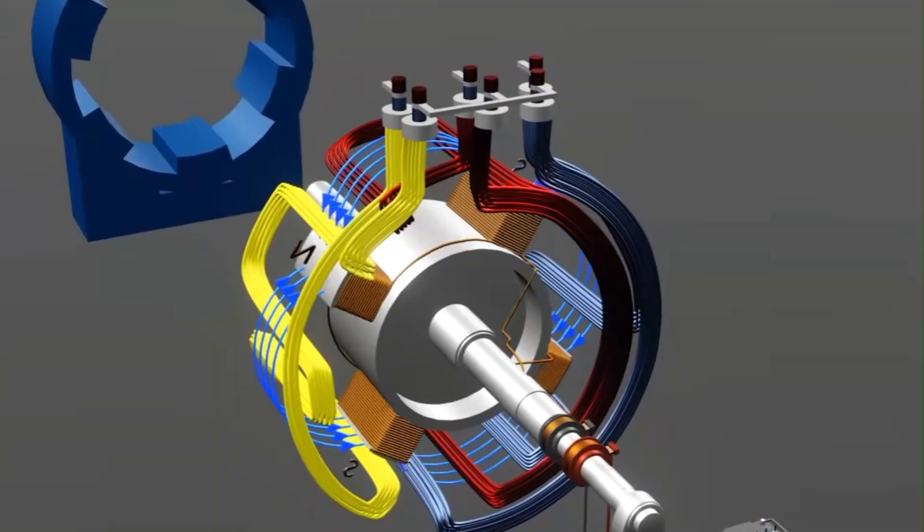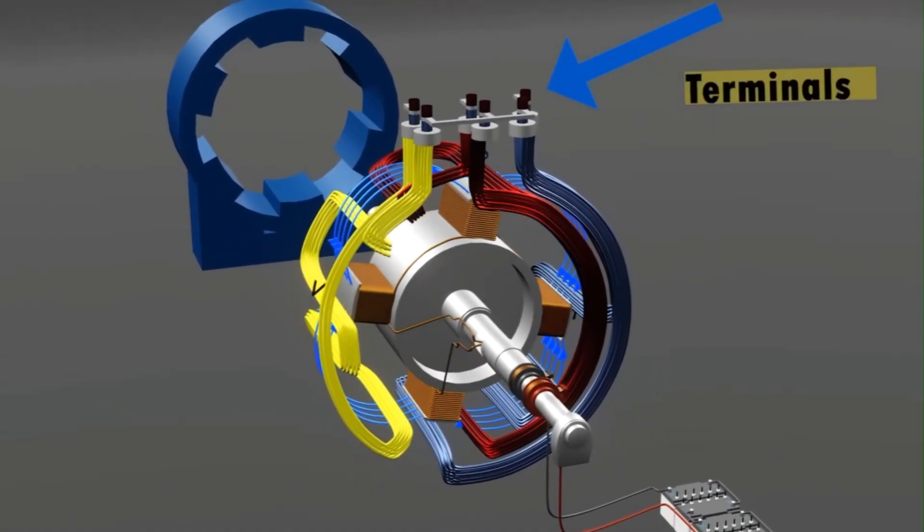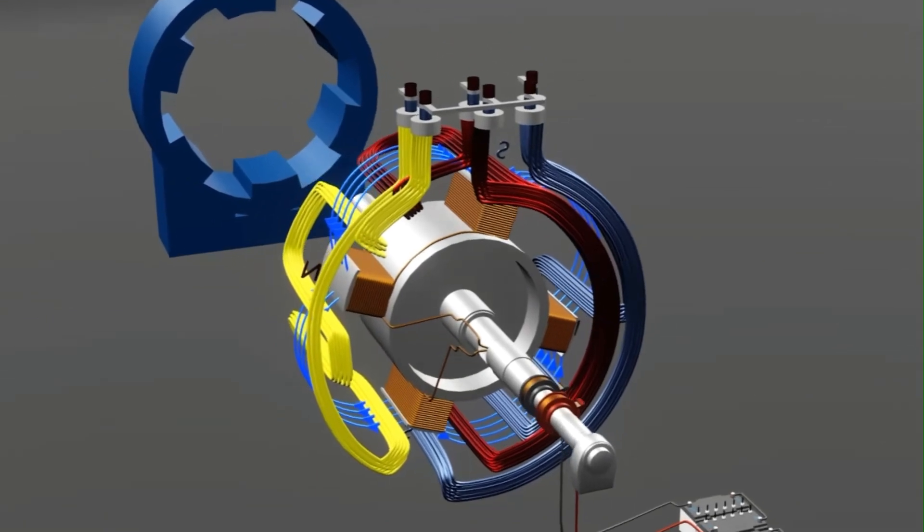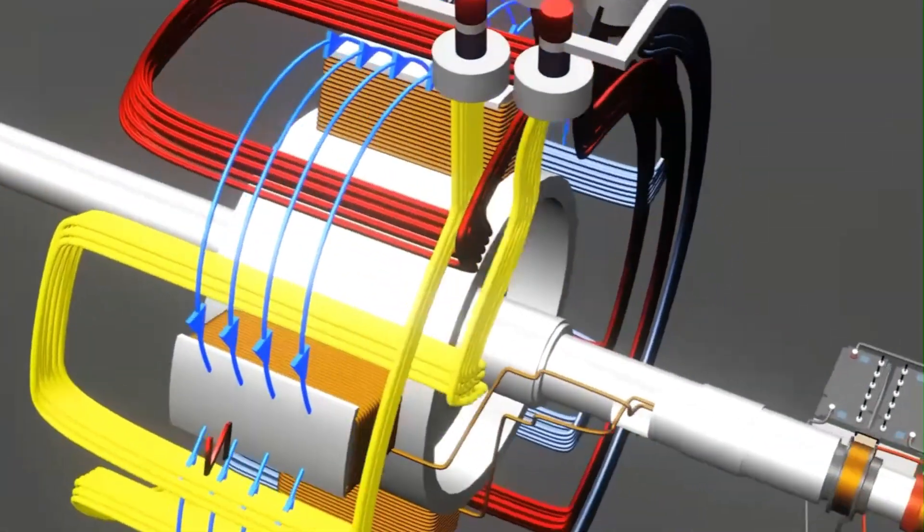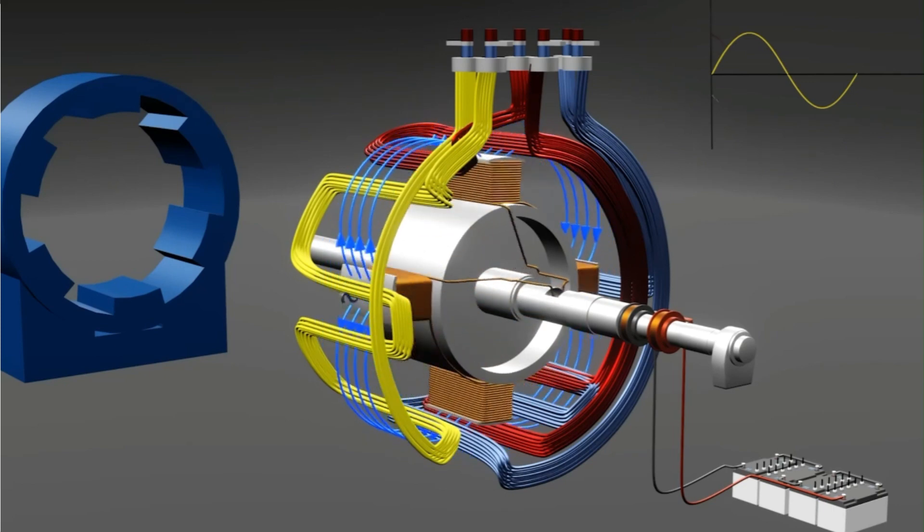Now, let's consider the stator, the stationary part of the generator. It houses the armature windings, where the voltage is induced. These windings are typically three-phase, producing three alternating currents that peak at different times.